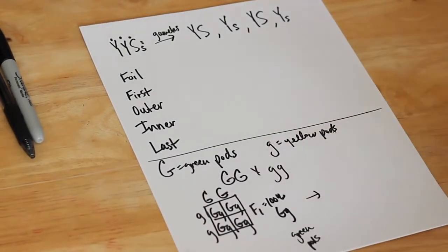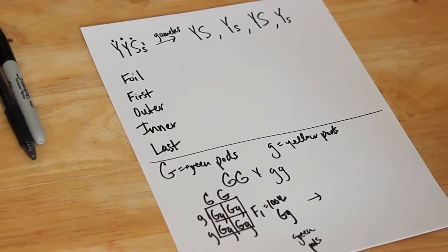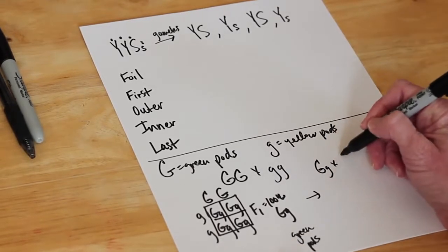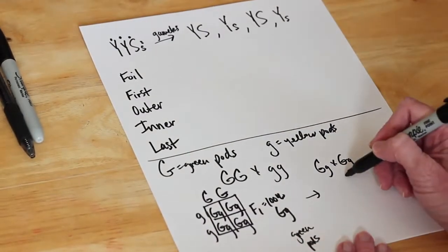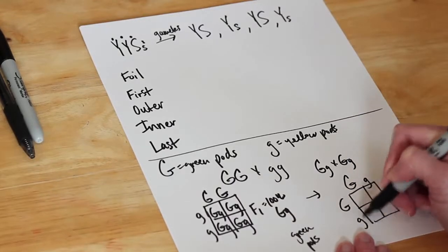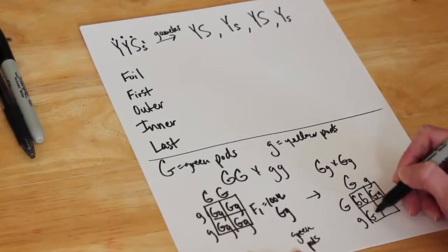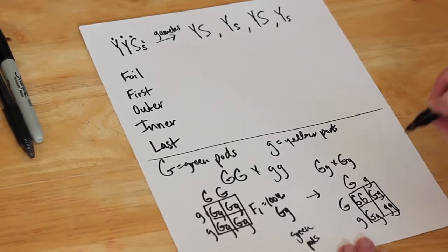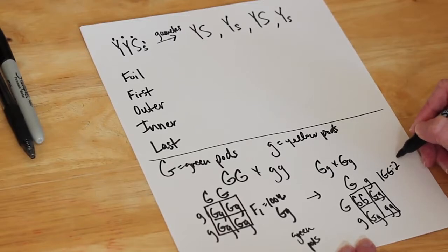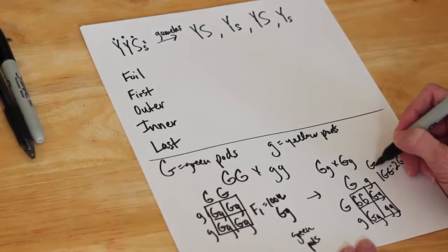The next question asks: what if you cross two F1 individuals — what will the phenotype of the offspring be? We cross big G little g with big G little g, set up the Punnett square, and fill it in. The genotypic ratio is one homozygous dominant to two heterozygous to one homozygous recessive. The phenotypic ratio is three with green pods to one with yellow pods.